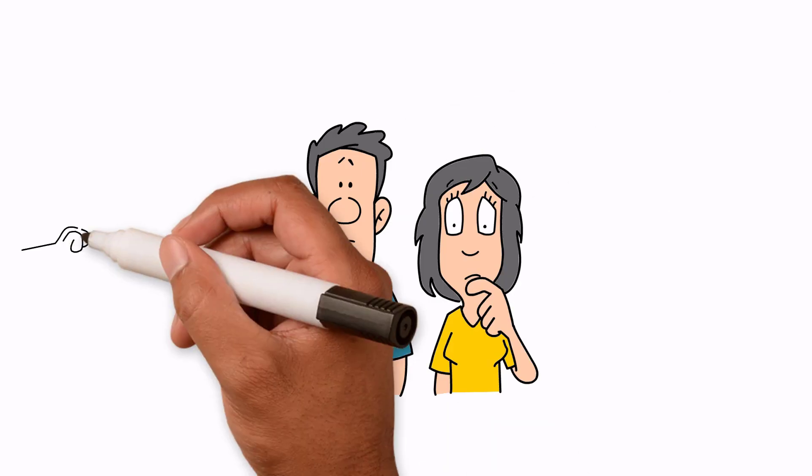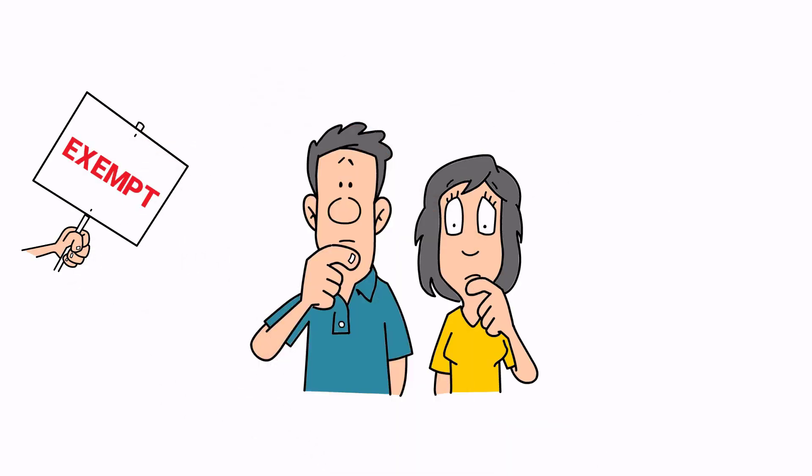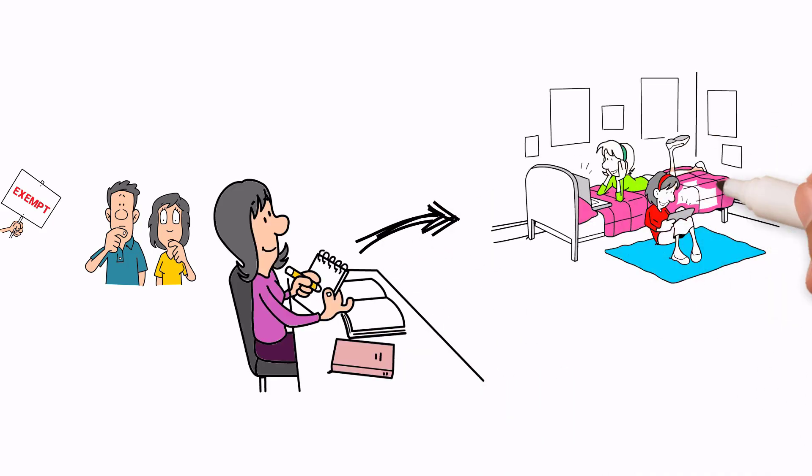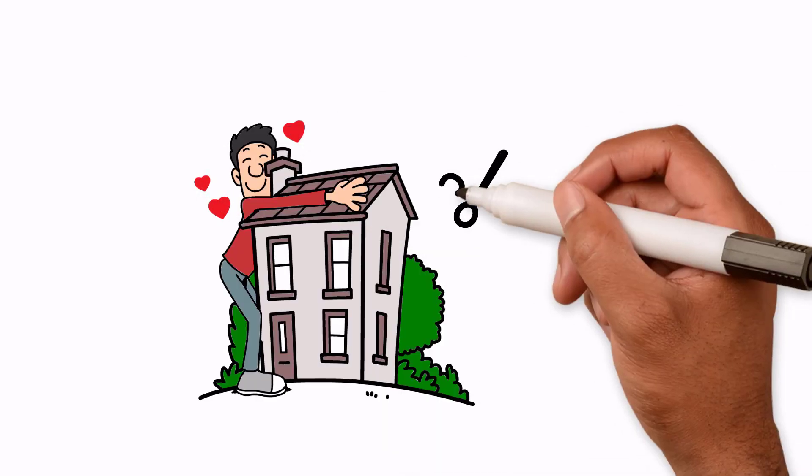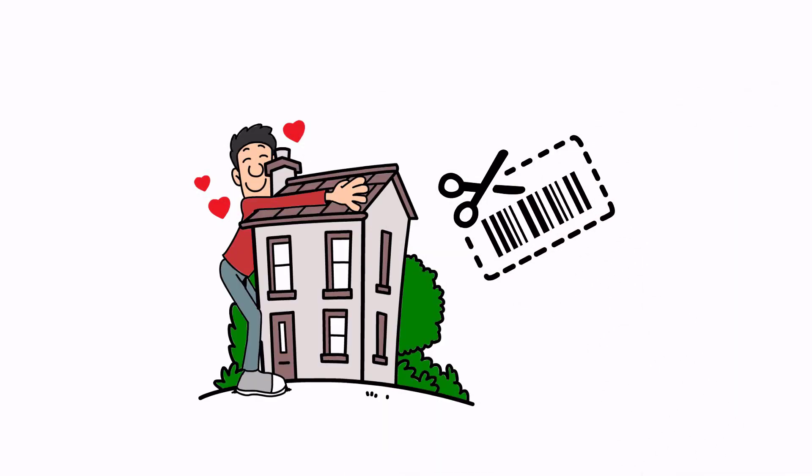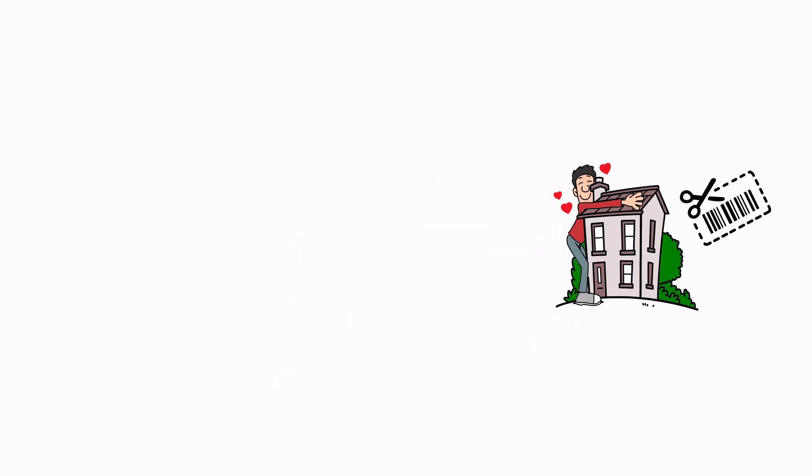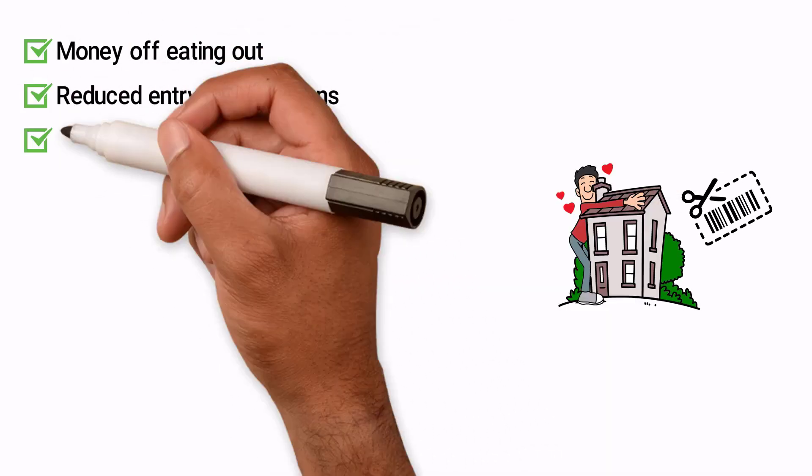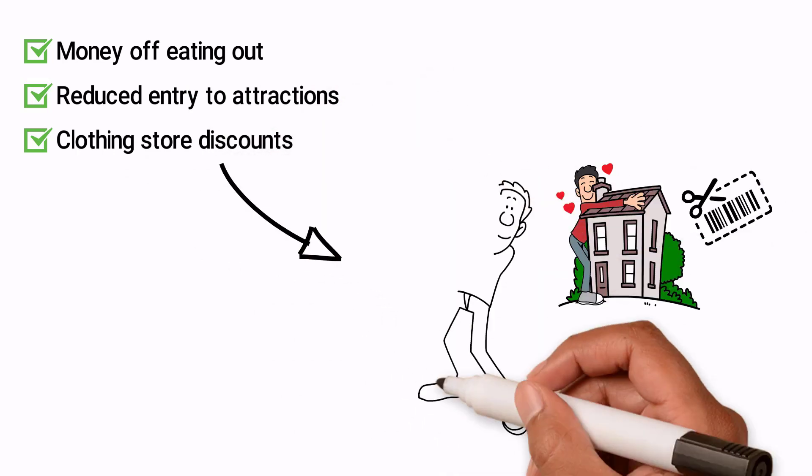Tax Haven. If you are a student, you can be exempt from council tax. You need to apply for an exemption and it's only granted if you live with other students. If not, your household may still be eligible for a discount. Don't forget about other discounts that students may be entitled to. Money off eating out, reduced entry to attractions, clothing store discounts can all add up to sizeable savings.